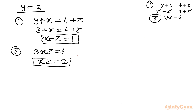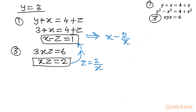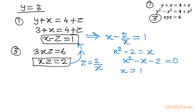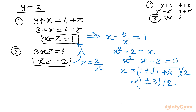From xz equals 2, we get z equals 2 over x. Substituting into x minus z equals 1: x minus 2 over x equals 1. Multiplying through by x: x squared minus 2 equals x, so x squared minus x minus 2 equals 0. Applying the quadratic formula: x equals (1 plus or minus square root of 1 plus 8) divided by 2 equals (1 plus or minus 3) divided by 2. This gives x equals 4 over 2 equals 2, or x equals minus 2 over 2 equals minus 1.